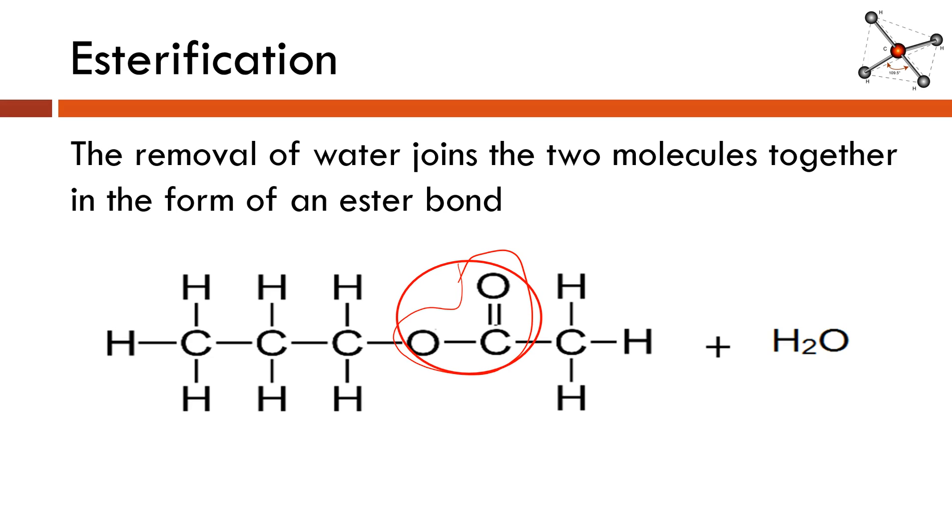So I have created an ester. And the name of this ester would be propyl ethanoate. So I create an ester and then I kind of make this byproduct of water that I generally don't need, but I can't create the ester linkage without dehydrating the compounds or the molecules.